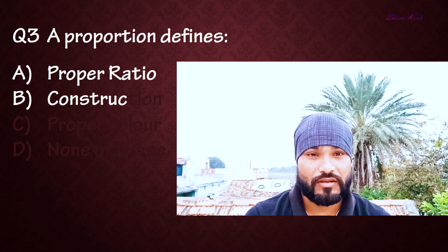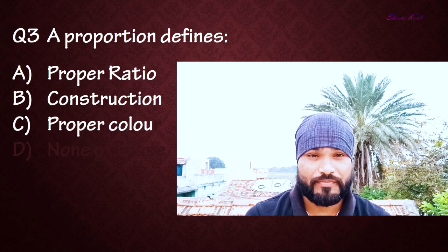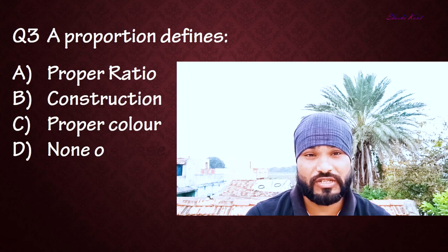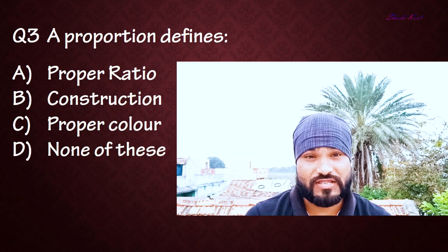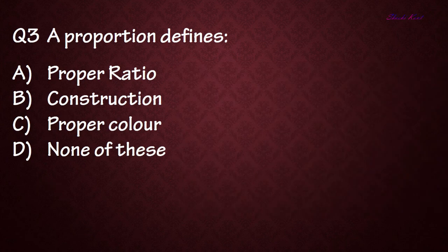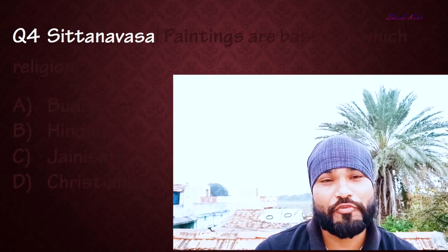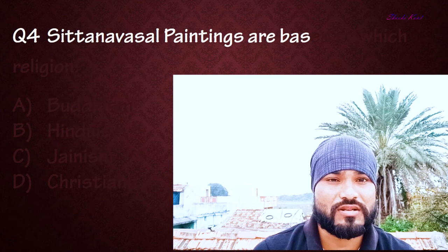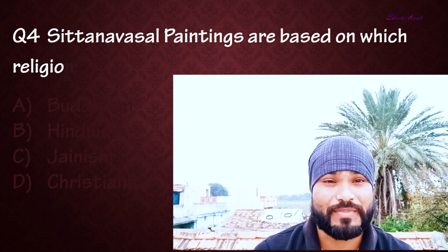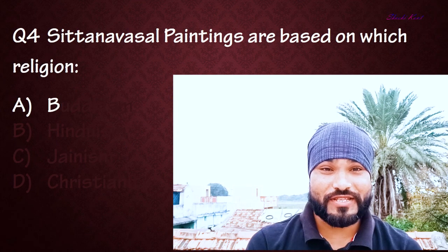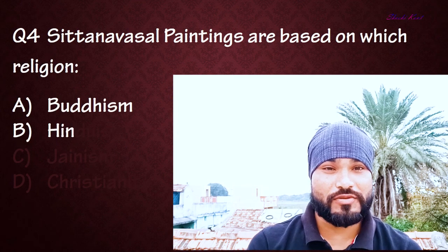Question number three: Proportion defines — Option A: Proper ratio, Option B: Construction, Option C: Proper color, Option D: None of these. The correct answer is A: Proper ratio.